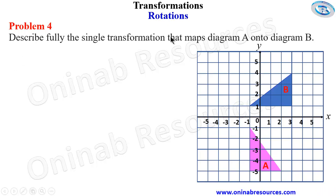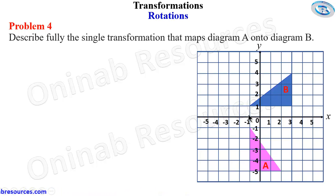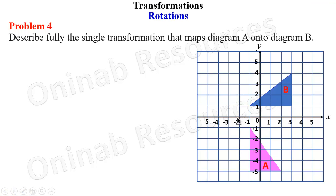For problem four: describe fully the single transformation that maps diagram A onto diagram B. We observe the two shapes — this is object A and this is the image. If you look carefully, this is not a reflection and it is not a translation. We now consider rotation. If the object turns up, you can see it is a rotation. Where is the center, what direction, and what angle?